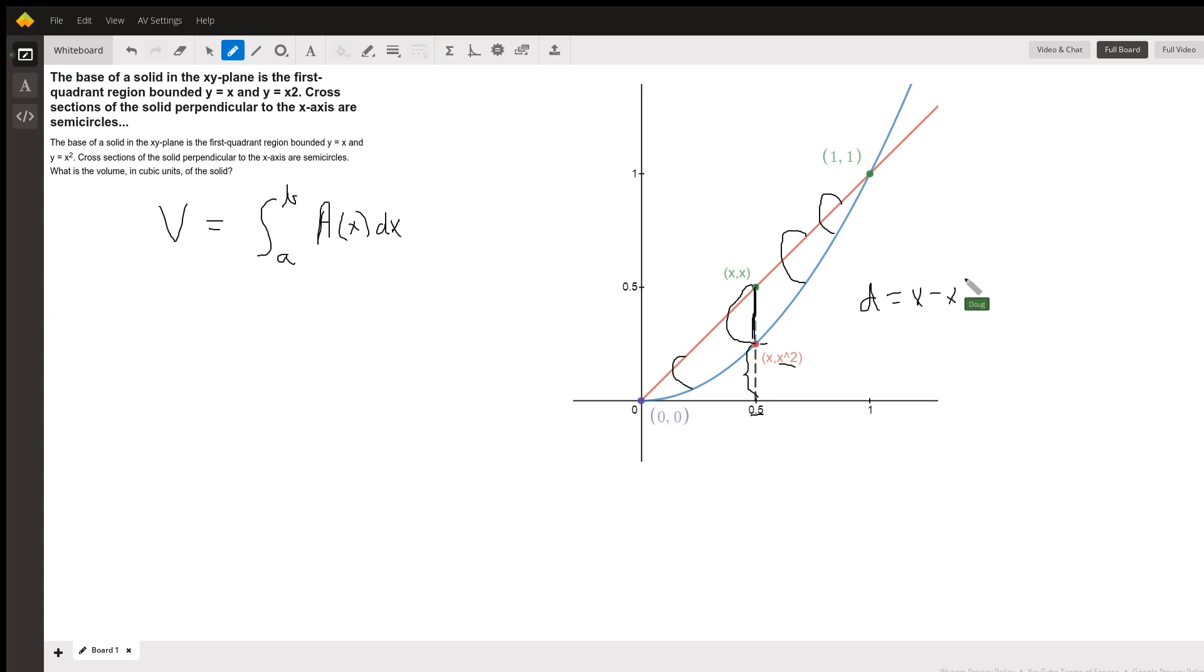Now, how do you find the area of a circle? Well, you need to square the radius. So the radius of that semicircle is x minus x squared all over 2.